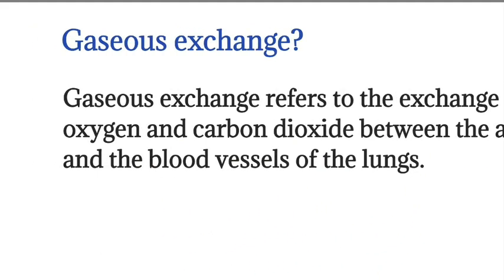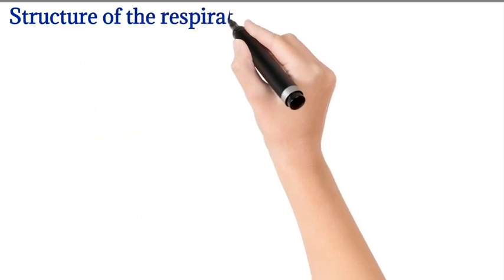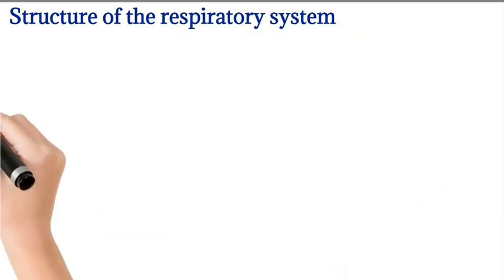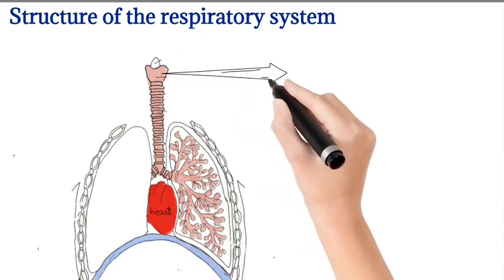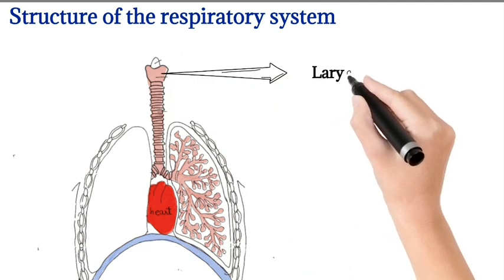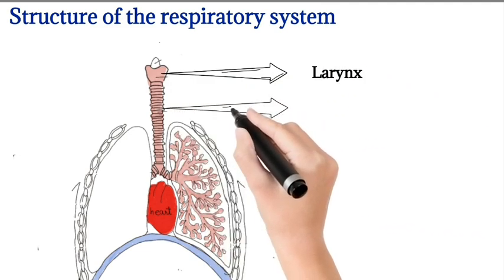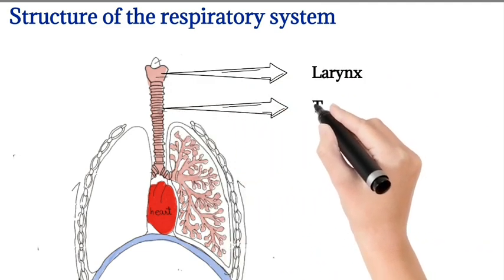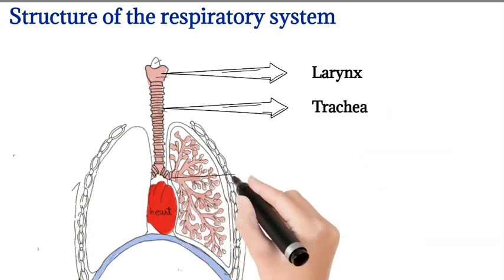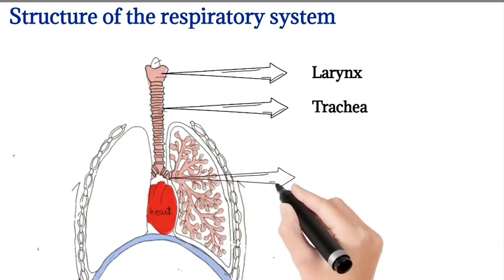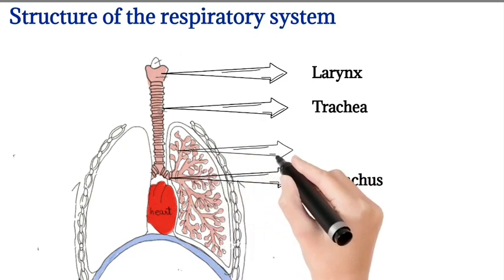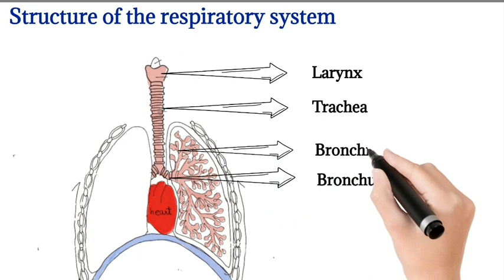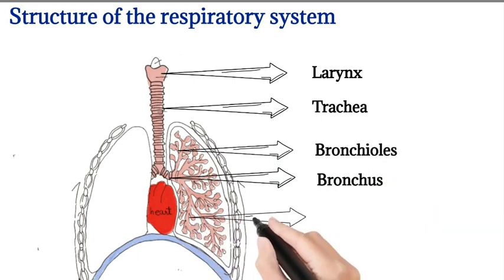Next we move on to the structure of the respiratory system. See the picture. The upper part is called the larynx, or voice box, and the two structures are called the trachea. The trachea is separated into two branches which are called the bronchus, and there are bronchioles which are connected to the bronchus.